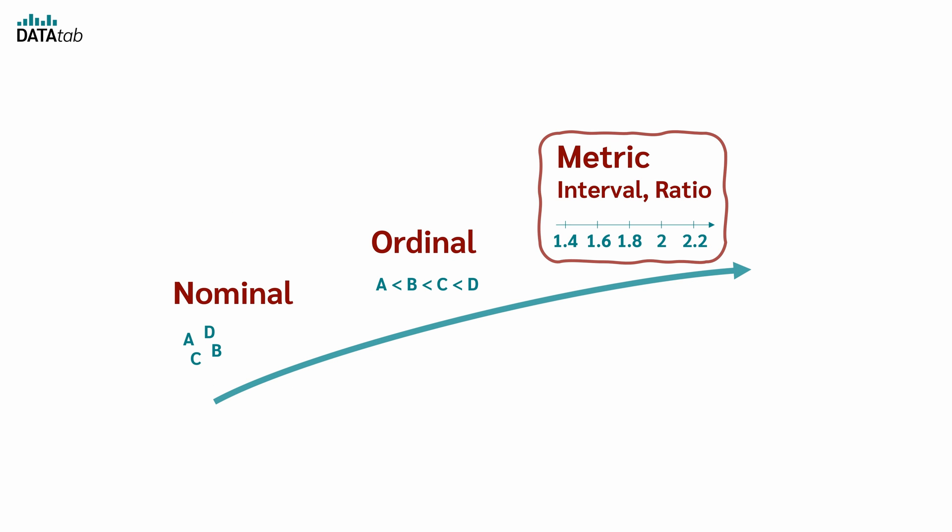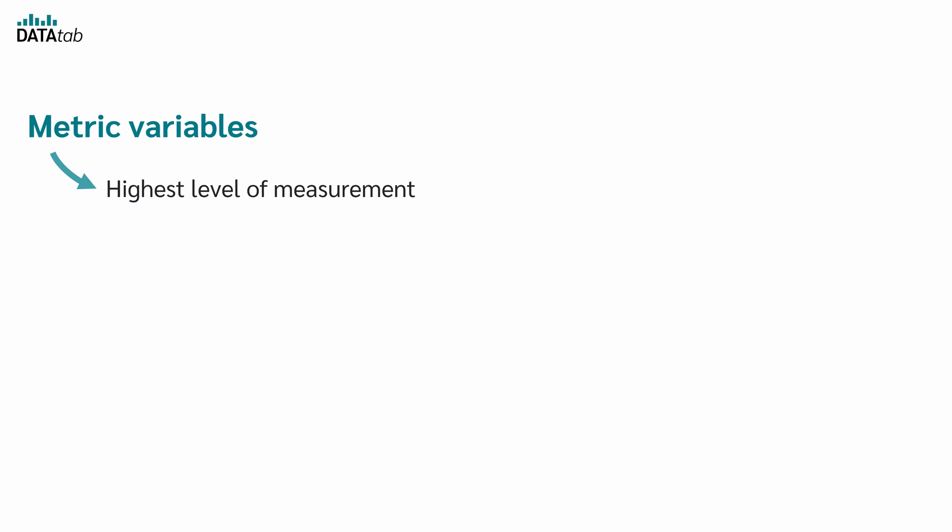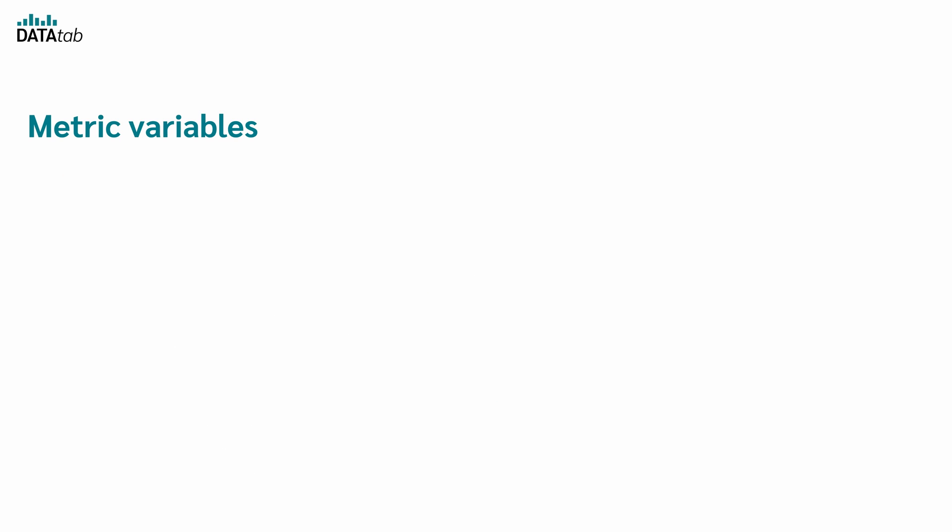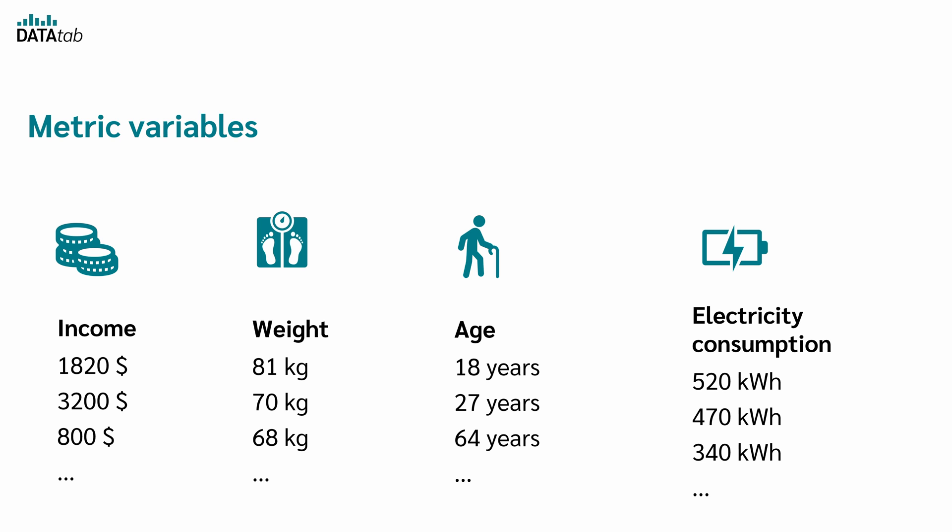What about metric variables? Metric variables are the highest level of measurement. Metric data is like Ordinal, but the intervals between values are equally spaced. This means that differences in sums can be formed meaningfully. Examples of metric variables are income, weight, age, and electricity consumption.